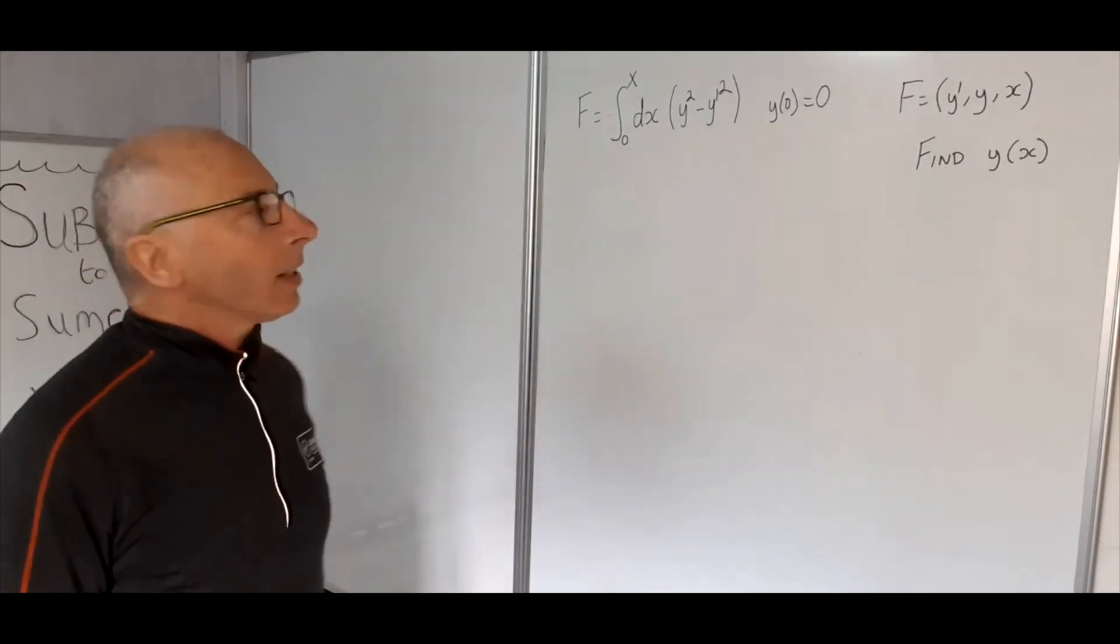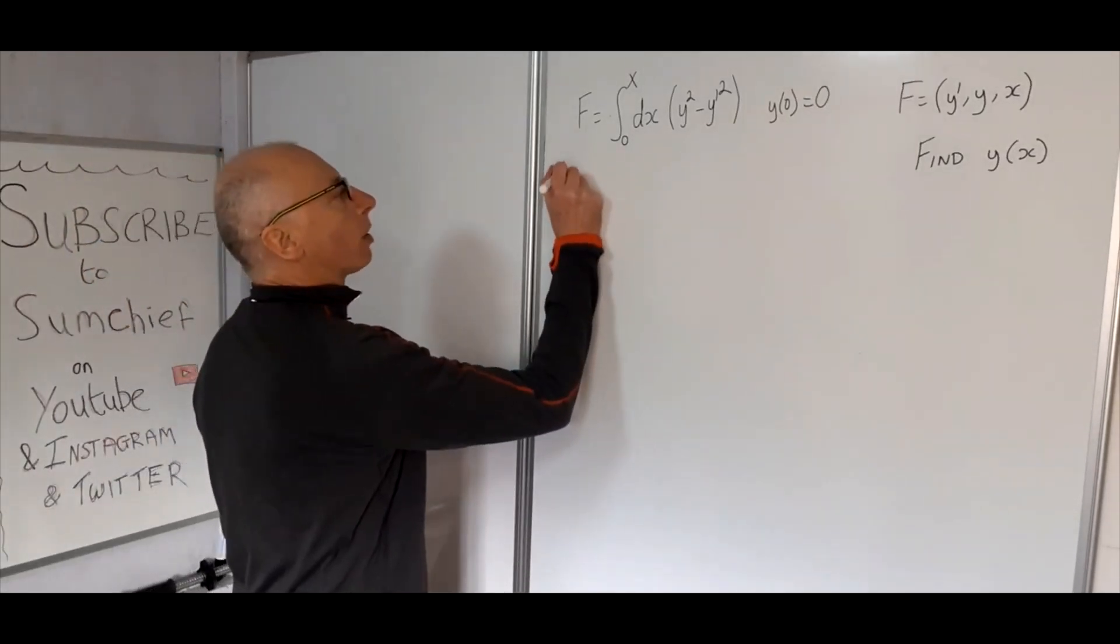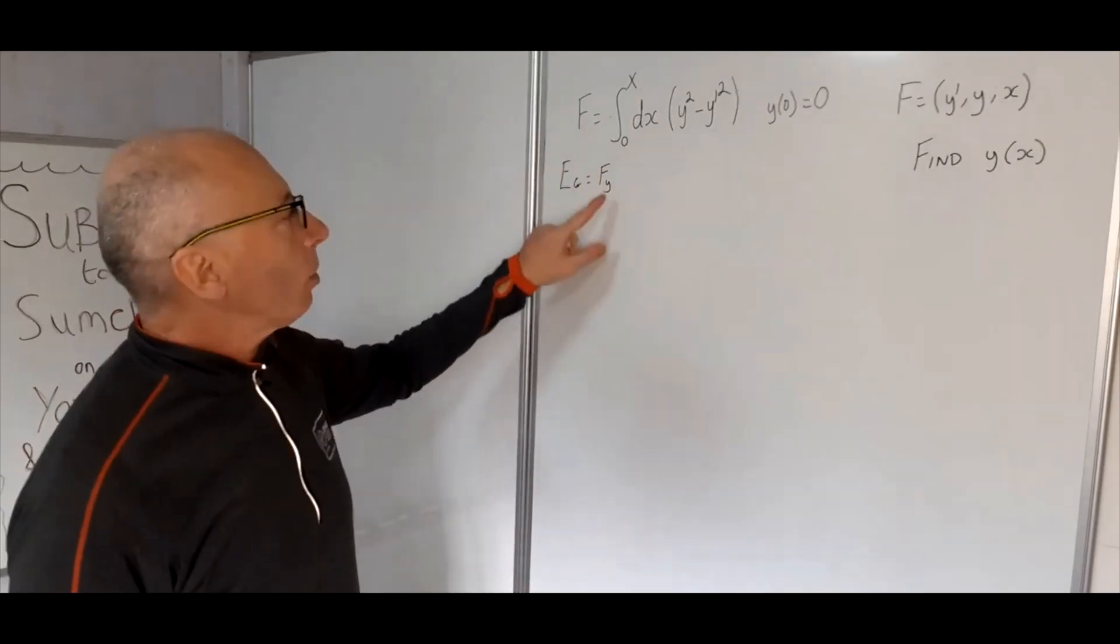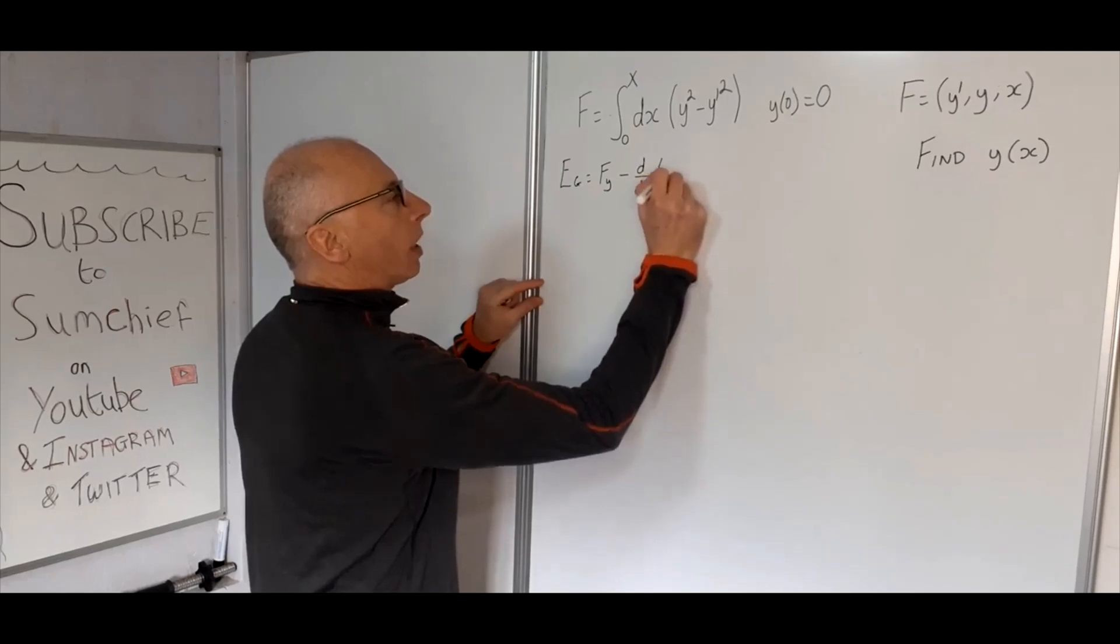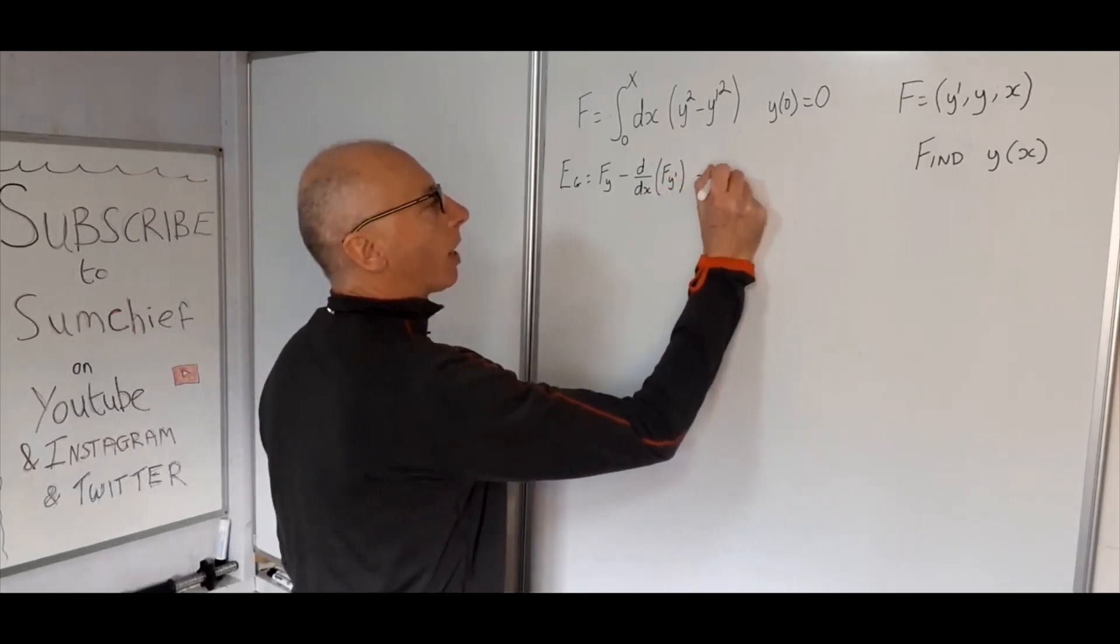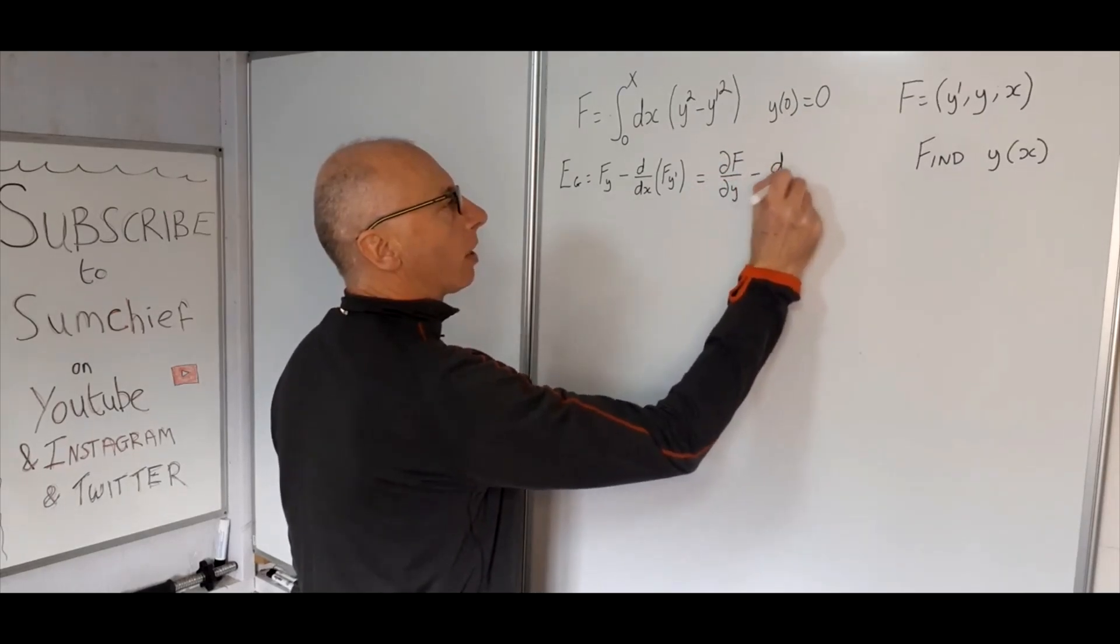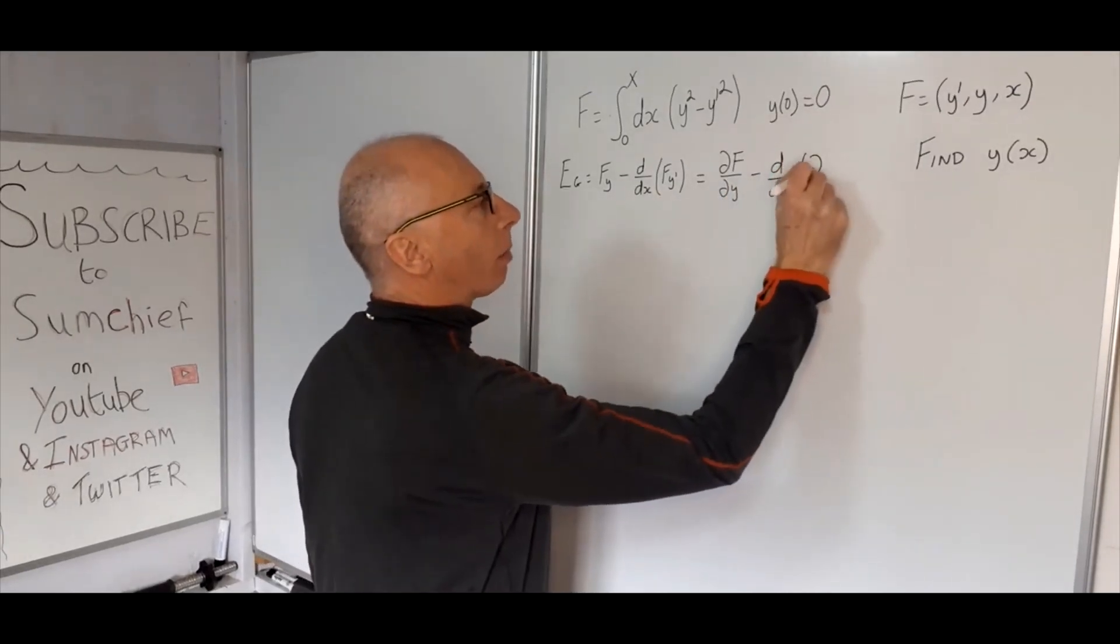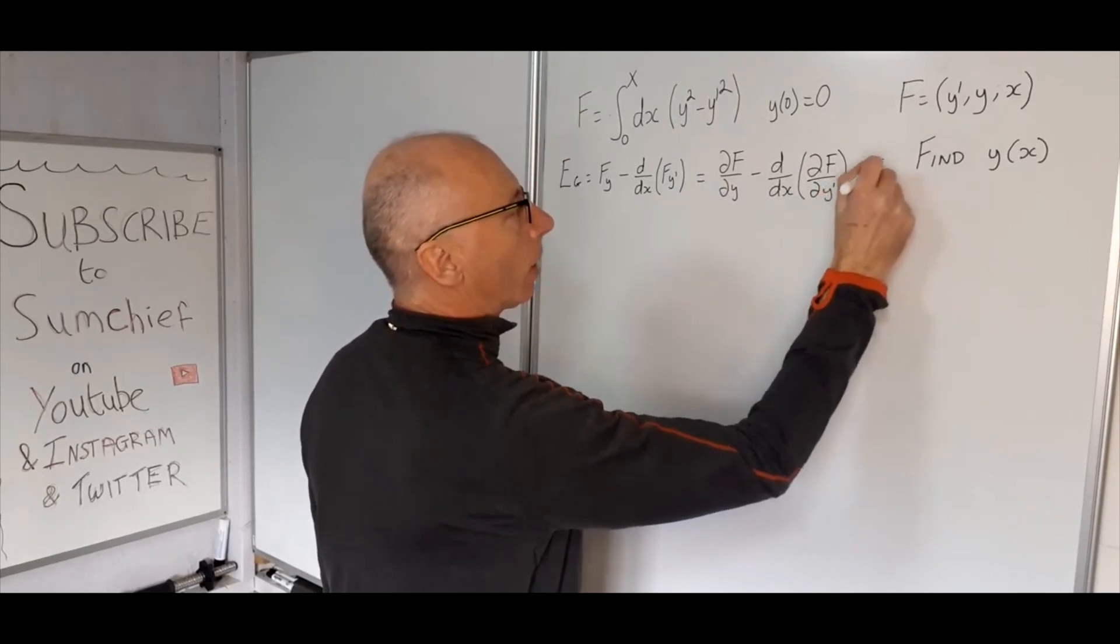So how are we going to go about that? Well, first things we can look for is the Euler-Lagrange equation. So the Euler-Lagrange equation is partial derivative of this functional with regards to y minus the total derivative of the functional with regards to y prime. Another way you could write this is the partial of f with regards to y minus the total derivative of the functional with regards to y prime. So the partial of f with regards to y prime, and these all equal 0.